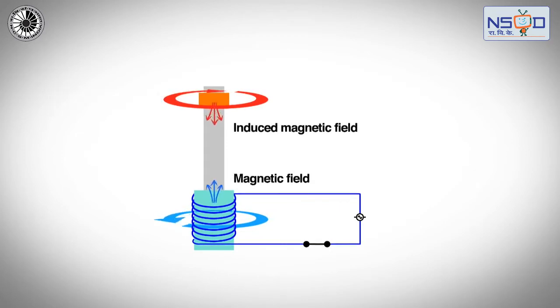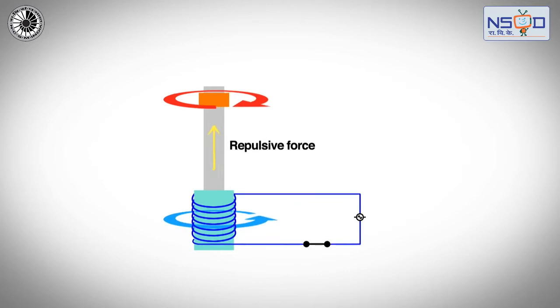The eddy currents of coil and the aluminium disc have their own magnetic field, which generates repulsive force between the two magnetic fields. When the repulsive force becomes greater than the force of gravity acting on the aluminium disc, the disc jumps up.